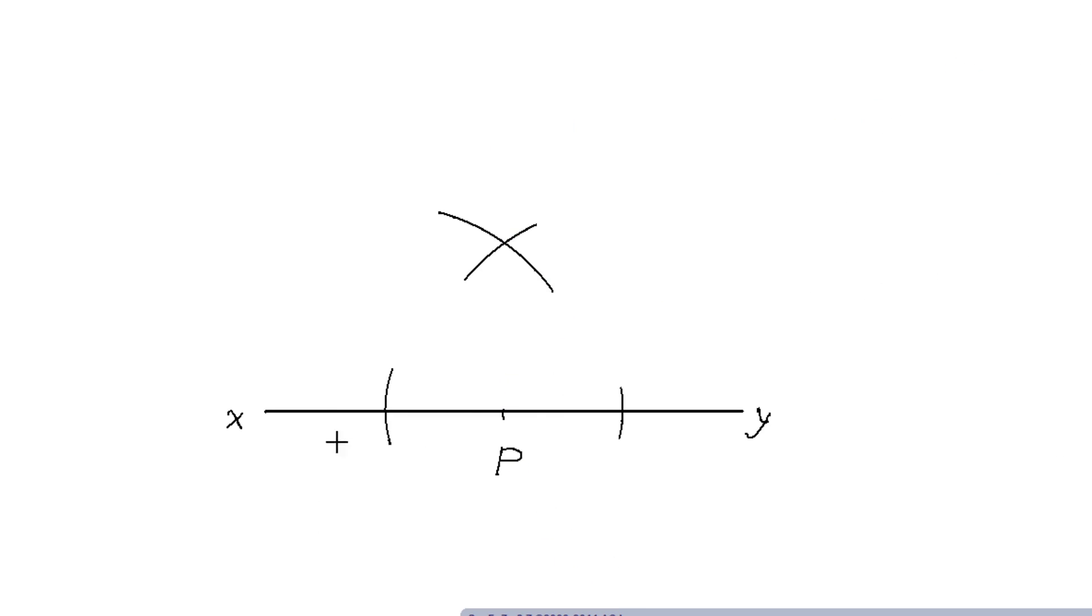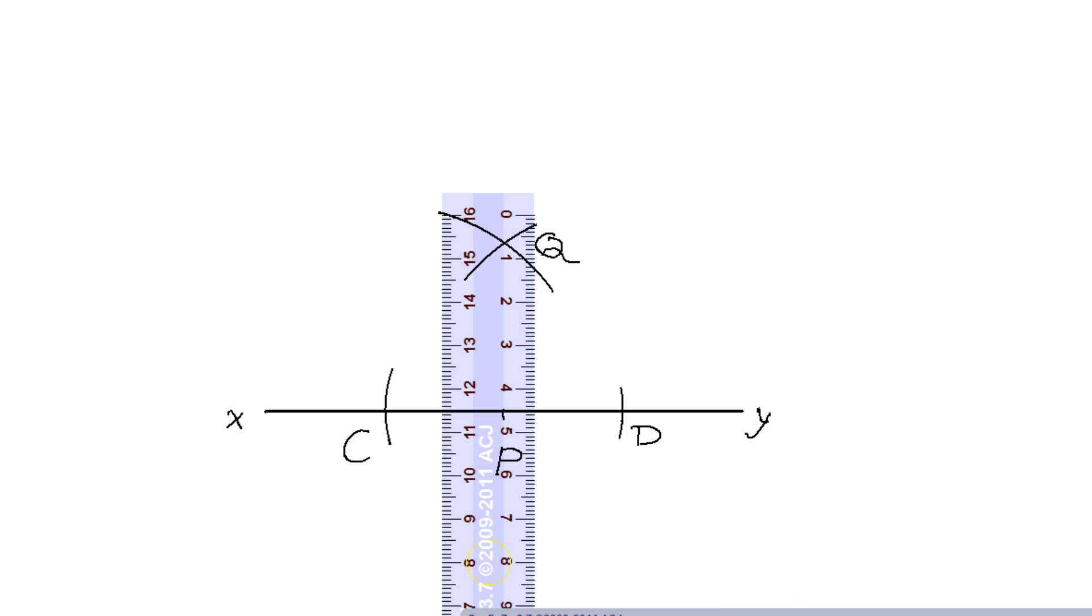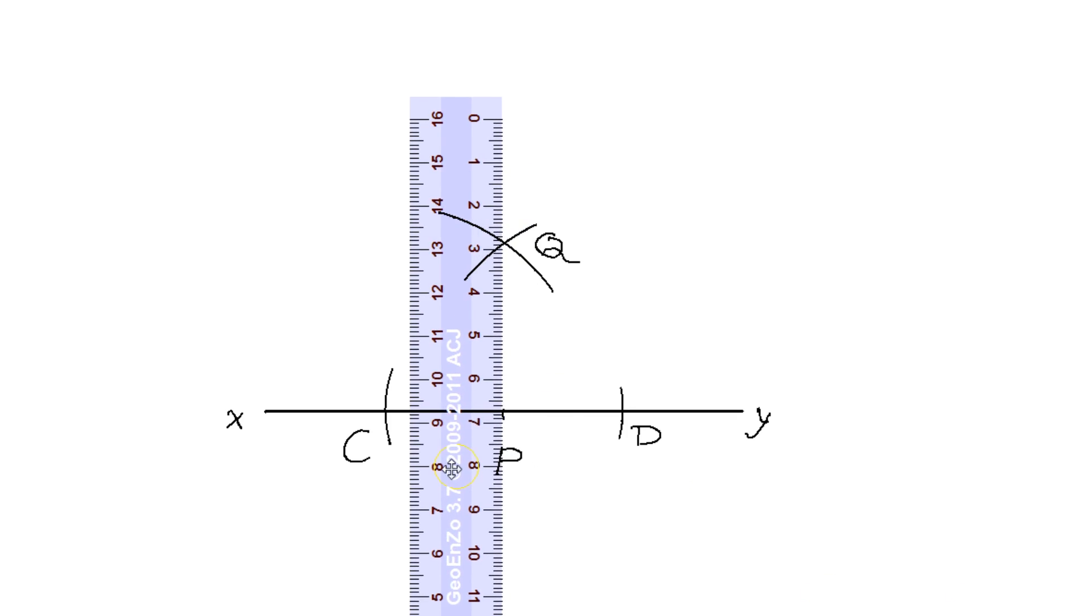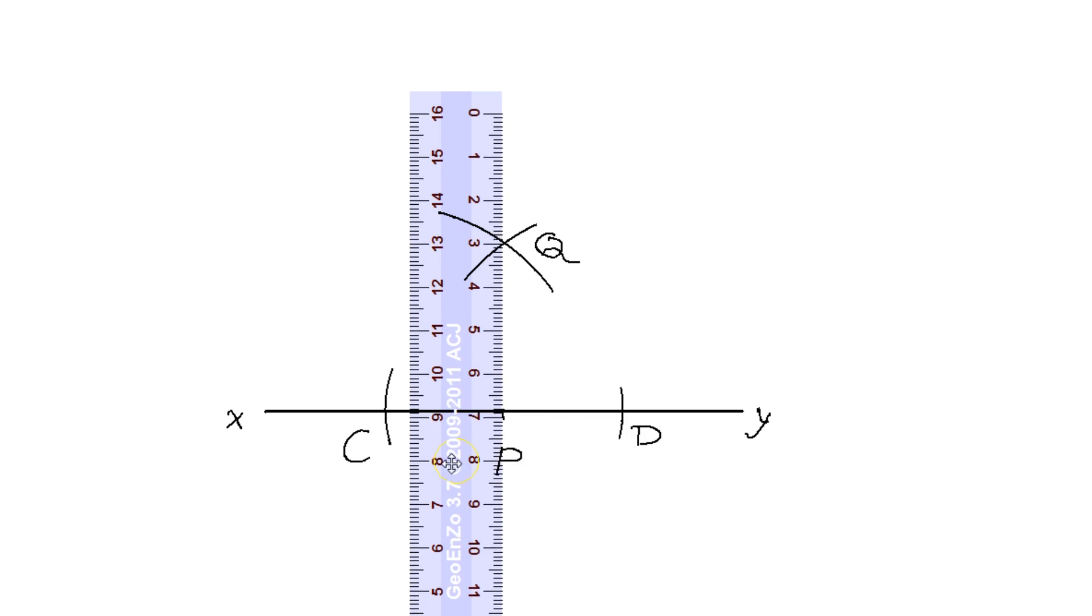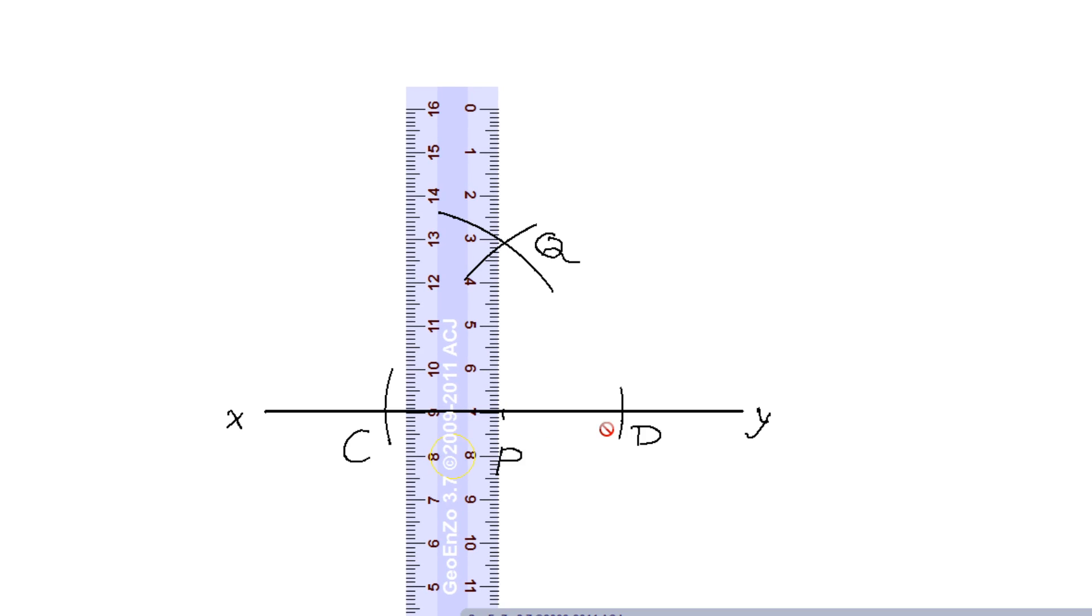This is point C, this is point D, and the arcs have intersected at point Q. Now take the ruler and connect point P and Q. Bring it here exactly—it should connect them precisely. This is a crucial part.